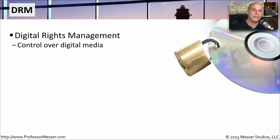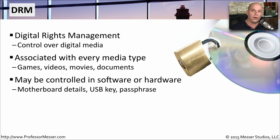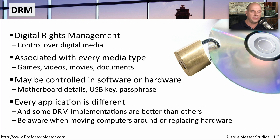Digital rights management is a way that the owner of a particular kind of media can control how that media is being used. You can see this associated with every type of media type that you'll run into, whether it's games, movies, or even documents — the owner of the content can control how you are using any of these. It could be something used in software, or you may need some piece of hardware to use in conjunction with that media. You may be plugging in a USB key, for instance, to be able to run a piece of software. Every application works a little bit differently, and every DRM implementation has a different way of being implemented, so you have to make sure you're working with the manufacturer or the owner of the content, especially if you're changing out a computer or moving different components around — you want to be sure the DRM is still going to work once you update that device.